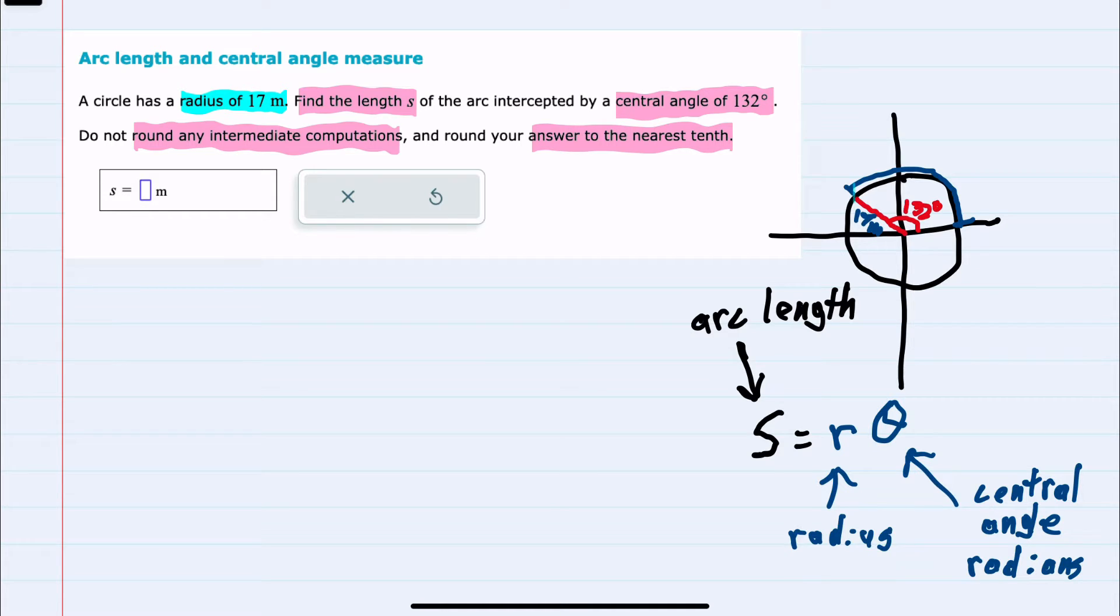Which again is just the distance that far around that circle here with the radius of 17 meters. So plugging in our values,